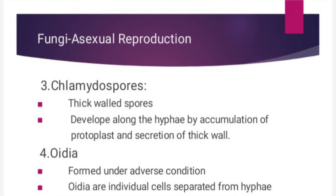The next type is known as chlamydospores. These are very thick-walled spores and are very resistant structures. They develop along with the hyphae by the accumulation of protoplasts and secretion of a thick cell wall. In the hyphae, the protoplasts accumulate to one end and the result is the secretion of a thick wall, forming a resistant structure.